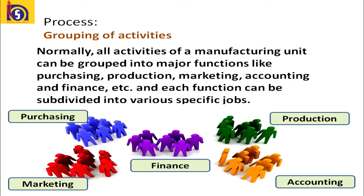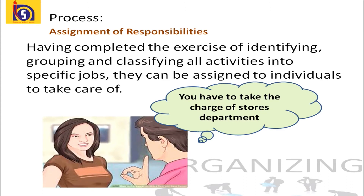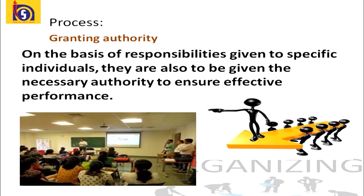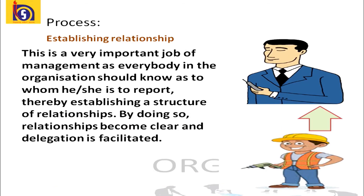All activities of a manufacturing unit can also be grouped into major functions like purchasing, production, marketing, accounting and finance, and each function can be subdivided into specific jobs. The third step is assignment of responsibility. Having identified, grouped, and classified all activities into specific jobs, those jobs should be assigned to individuals. When responsibility is assigned, the proper authority should also be given so as to complete the allotted task, ensuring effective performance.